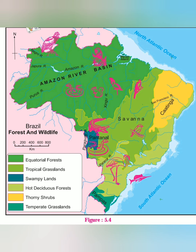In slash-and-burn agriculture, the evergreen forest is chopped down and burnt, and the land is then used for agriculture. After two to three years, when the land stops giving good yield, another piece of land is cleared and burnt. This leads to large-scale deforestation. Pollution is also increasing in this region, causing land degradation and environmental danger — these are the serious problems Brazil faces today.